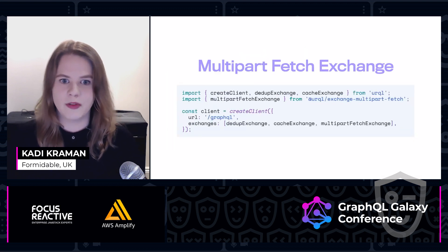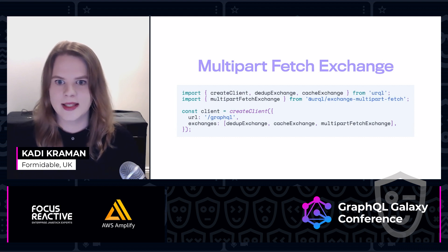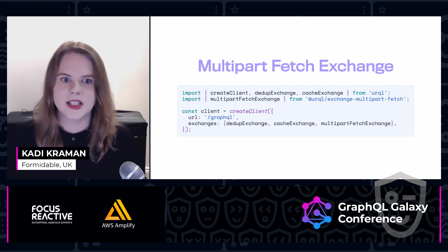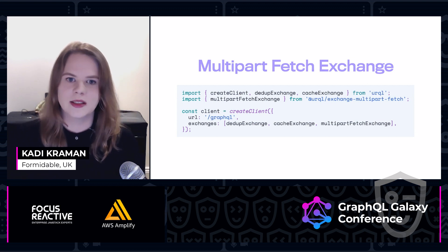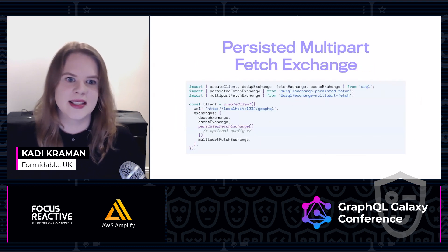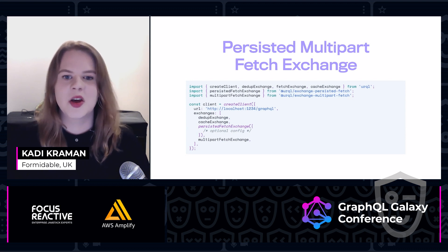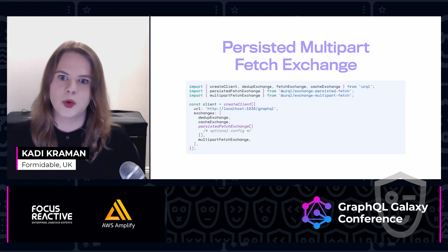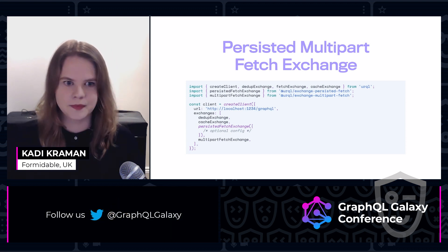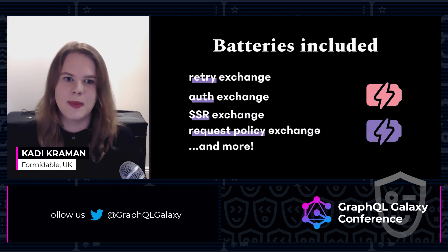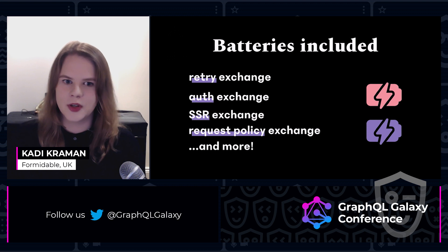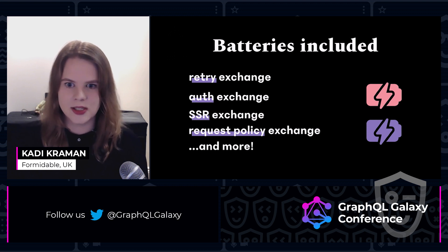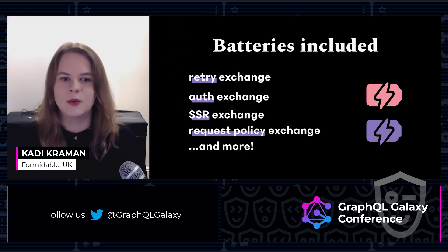If you wanted to enable file uploads via multipart form data and POST requests, you can use the multipart fetch exchange. This is a drop-in replacement for the default fetch exchange — it acts exactly like the fetch exchange unless the variables it receives for a mutation contain any files. And you can also combine the two in a persisted multipart fetch exchange that supports both automatic persisted queries and file uploads. In general, Urql aims for a batteries-included approach — a one-stop shop for everything you need from your GraphQL client.